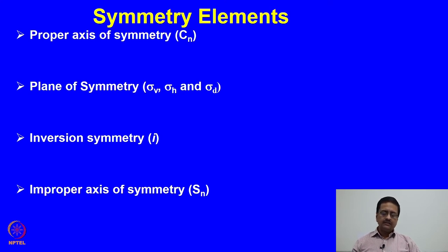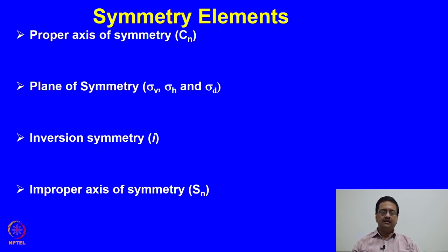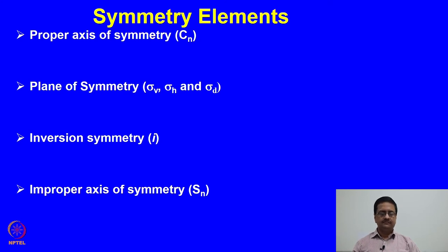When we try to identify the symmetry elements that may be present in a molecule, we need to really study the molecule in three dimensions. We need to find out what are the possible elements of symmetry present in the molecule, and understand the few different types of symmetry elements that are known to be present in molecules.